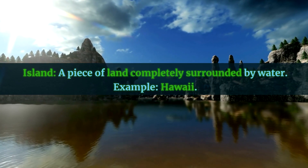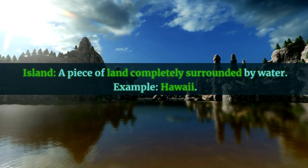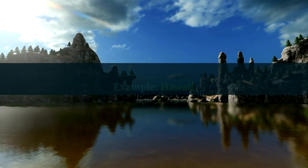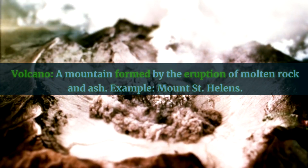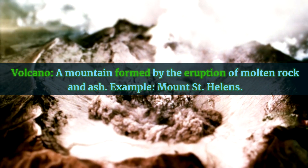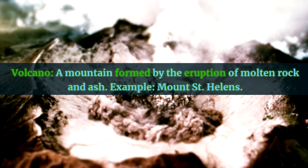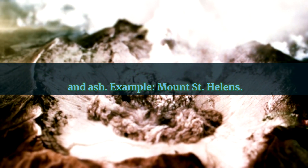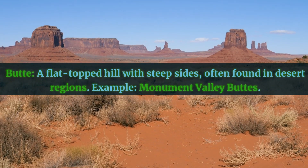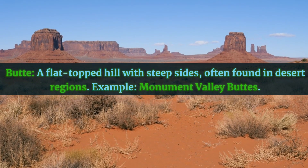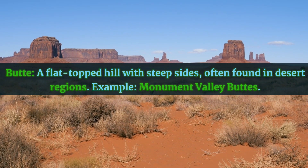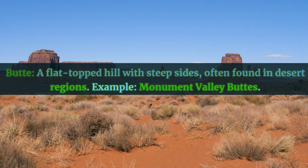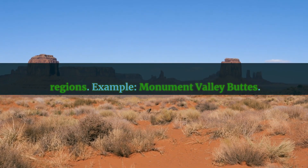Island: a piece of land completely surrounded by water. Example: Hawaii. Volcano: a mountain formed by the eruption of molten rock and ash. Example: Mount St. Helens. Butte: a flat-topped hill with steep sides, often found in desert regions. Example: Monument Valley Buttes.